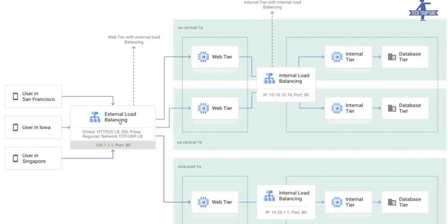Why do we need a load balancer here? You can see that users are not directly hitting the web tier of YouTube — they are hitting the load balancer IP. What will happen if the user in San Francisco hits the load balancer IP? The load balancer will detect that this user is from San Francisco and needs better performance. It will try to give minimum latency by serving traffic from US Central 1A.